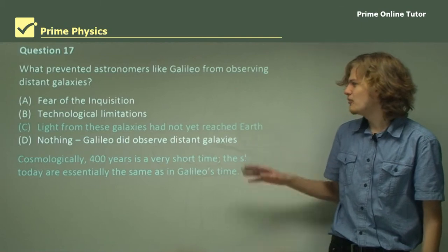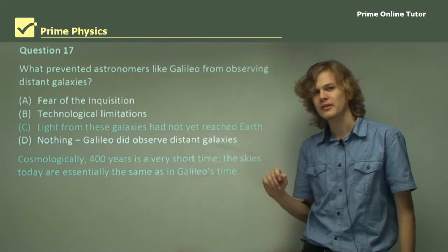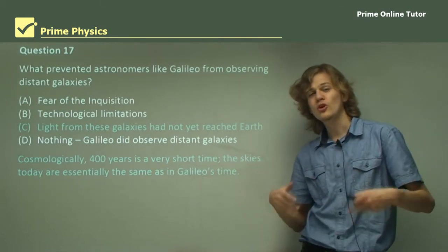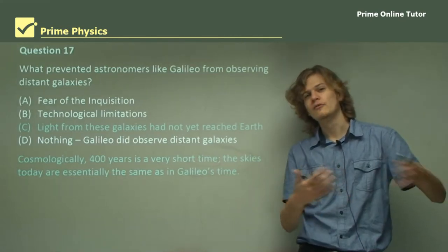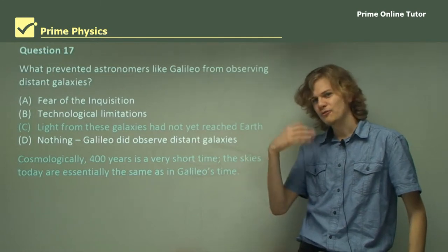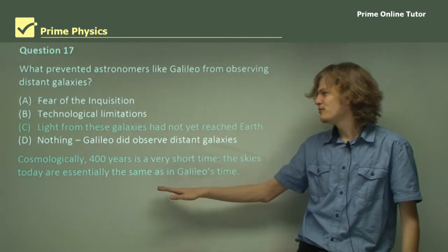Is it then C? Light from these galaxies had not yet reached Earth. Now this does seem fairly plausible. We know that some objects in the universe are so far away that light from them will never reach us. So at first this might seem like the right idea. But in fact, cosmologically, 400 years, the distance between Galileo and our time, is a very short amount of time indeed.